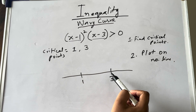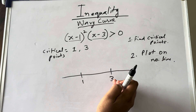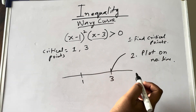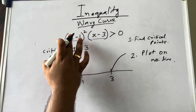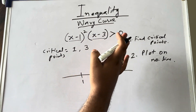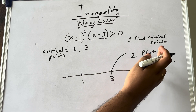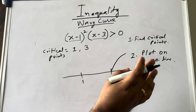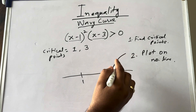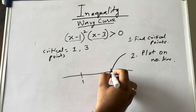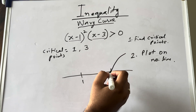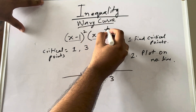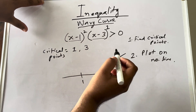Now you take the rightmost extreme point and draw a line starting from there — always start from the rightmost point. For example, if there had been an (x − 4) factor included, 4 would have been the rightmost and you would have started from 4. So now we have come to 3. You check what is the power of the factor (x − 3). The power is 1.